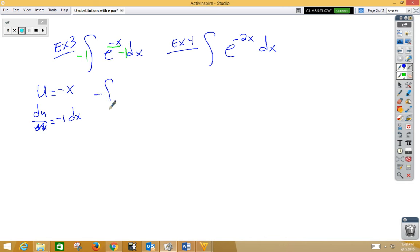Well, now I have negative integral e to the u du, which is negative e to the u plus c. But again, it's not really u, it's really negative x. So I get negative e to the negative x plus c.